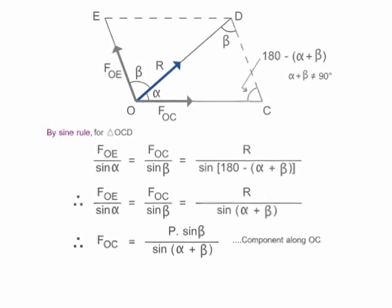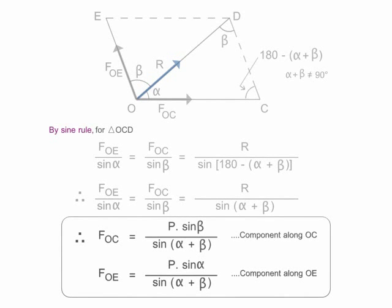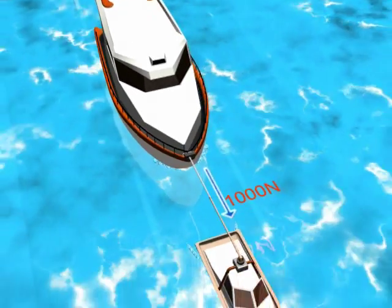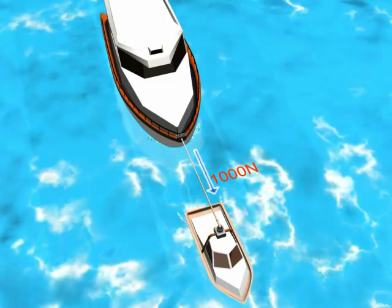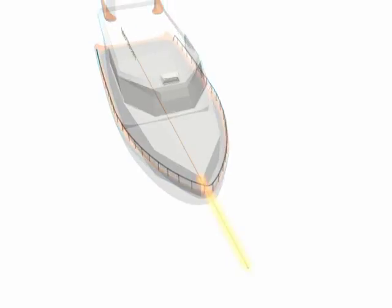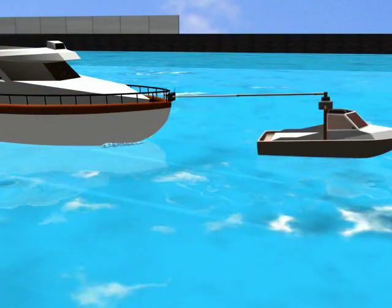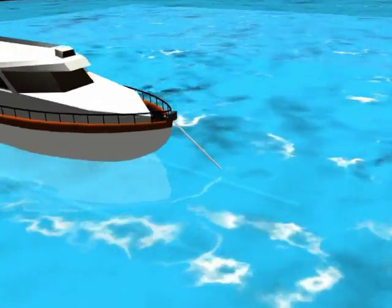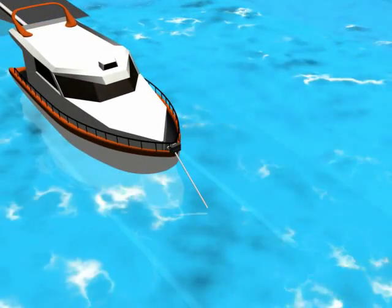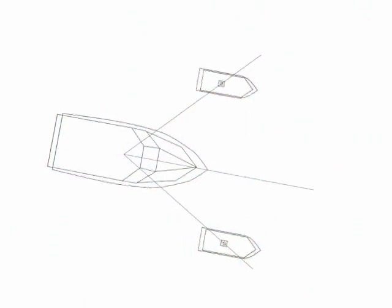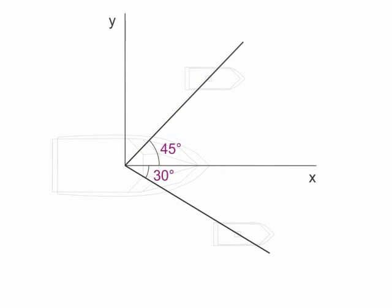Let's solve one example. Consider a force of 1000 Newton which is applied along the midstream to tow a boat. For some reason it is not possible to apply the force along the midstream, so two forces are applied at 30 degrees and 45 degrees on either side of it in the same plane. Now determine the magnitudes of these forces.